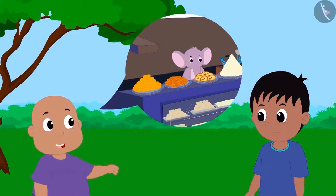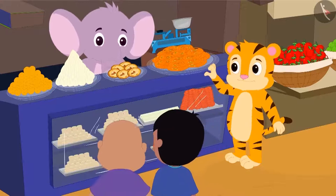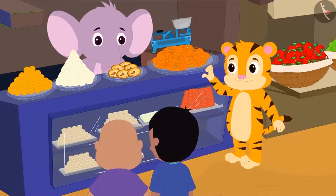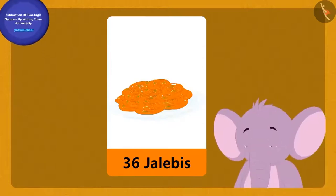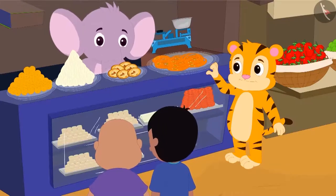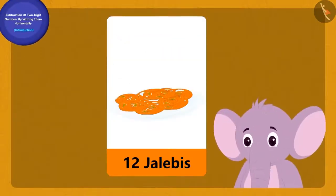I will give you another example there. When Raju and Bablu went to Appu's sweet shop, they saw that Appu had 36 jalebes. Then Shere Khan bought some jalebes from him and now he has 12 jalebes left.